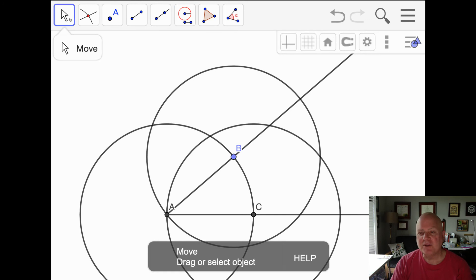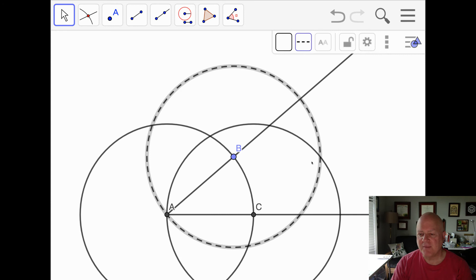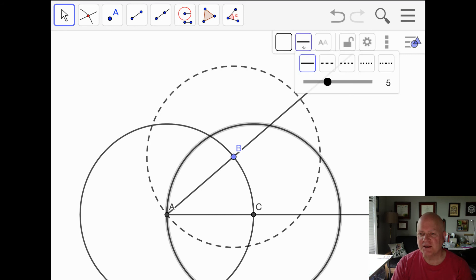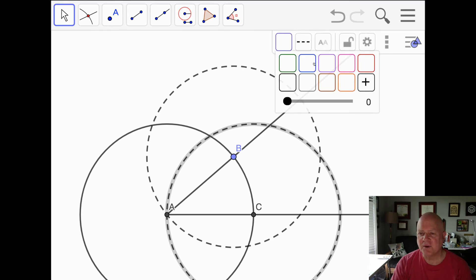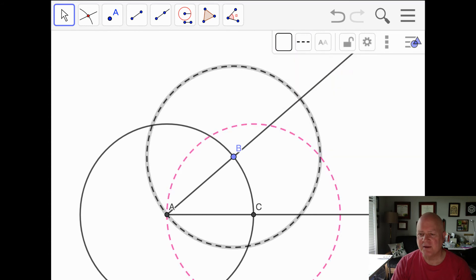And I'm going to mark these two circles with a different shape, maybe even a different color since you can see it. Let's see if I do it like this. I think I can do the color here. Make this one pink and this one pink.